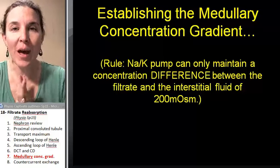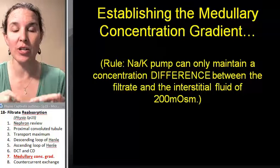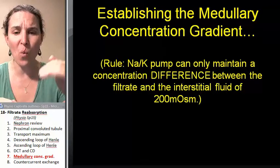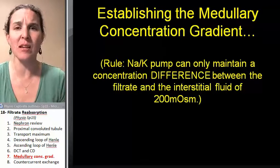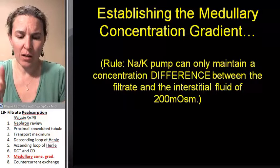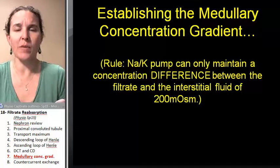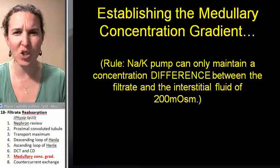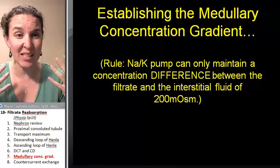I want to show you how this concentration gradient is established. And I'm talking about why at the base of the descending loop of Henle, the interstitial concentration is 1,200 milliosmoles. That's crazy talk.